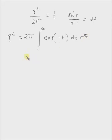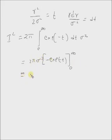Now this integral can be easily evaluated. Integral of exponential of minus t is basically minus exponential of minus t, from 0 to infinity, times sigma square. This equals 2 pi sigma square.